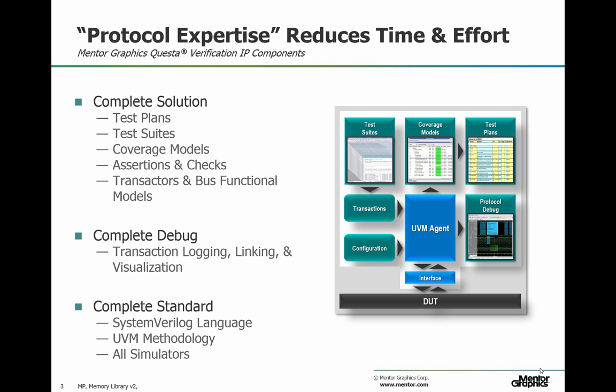We also produce a complete set of assertions to make sure that your design has not violated the protocol specification. These are produced in the same methodical way as the test plan and the coverage. If an assertion fires, it gives a detailed message which is cross-referenced back to a specific line in the protocol specification. QVIP produces linked transactions at all levels of abstraction, and these transactions can be viewed in Cruster Visualizer. Assertions can also be debugged in the same way in Cruster Visualizer.